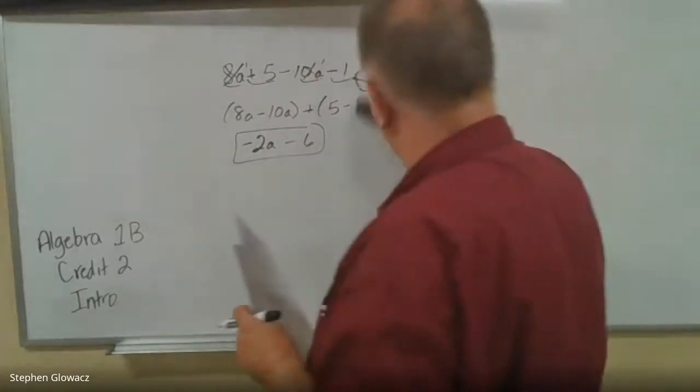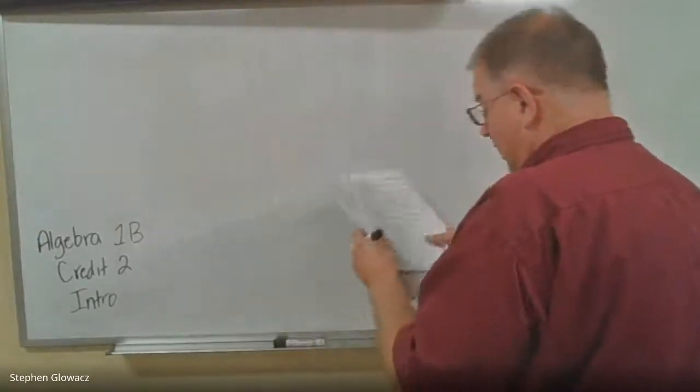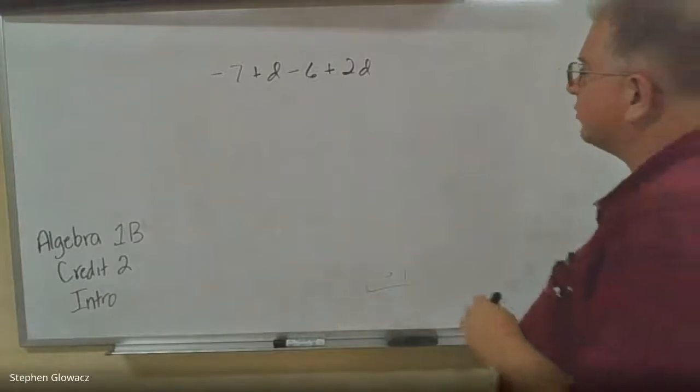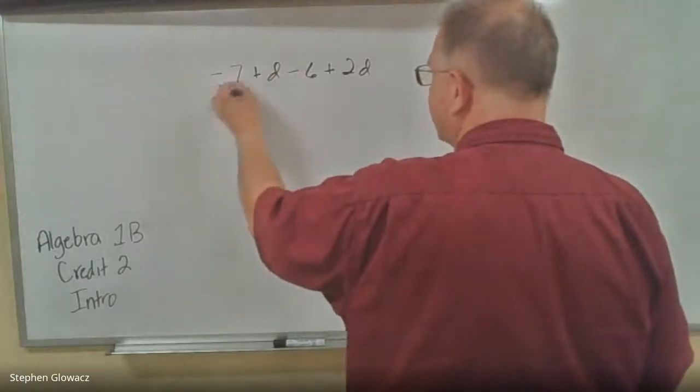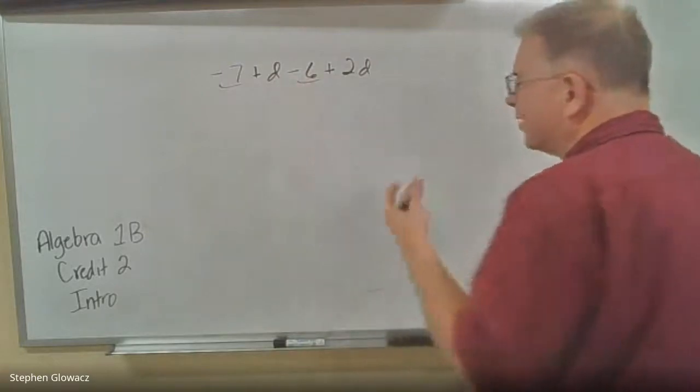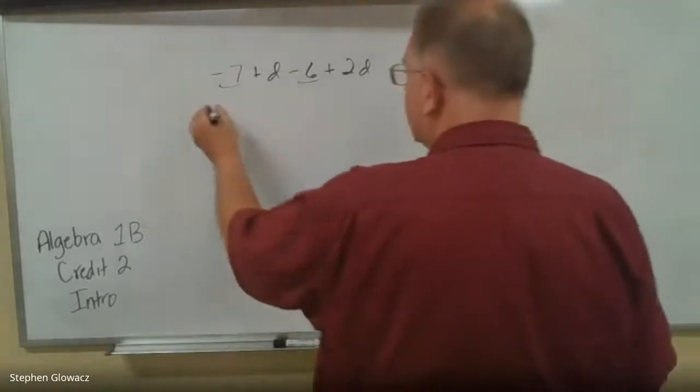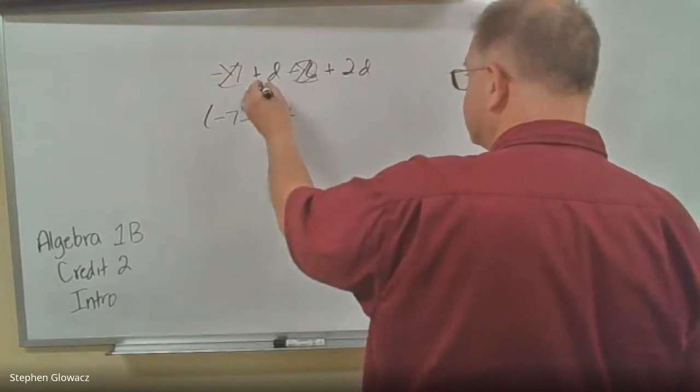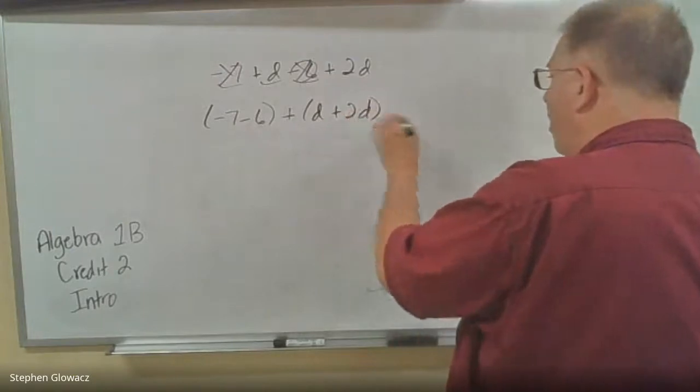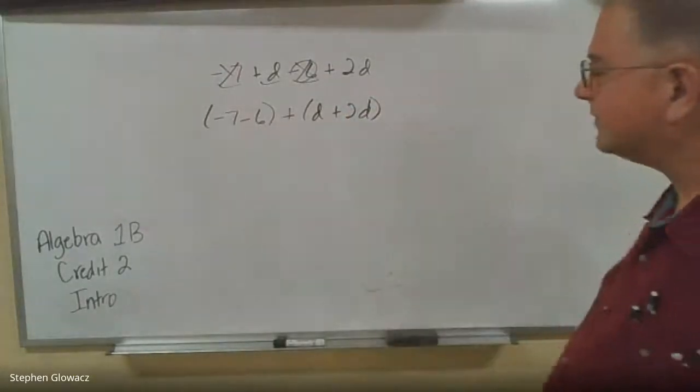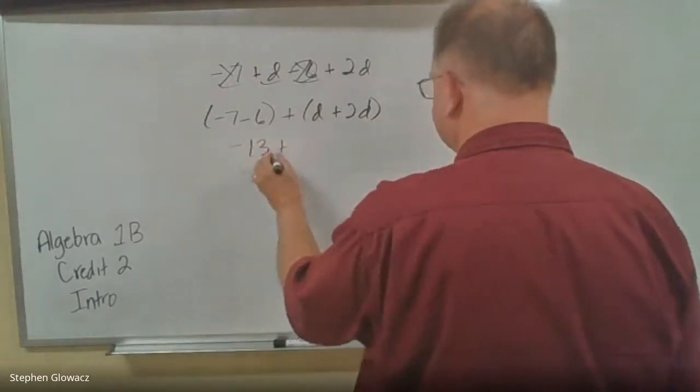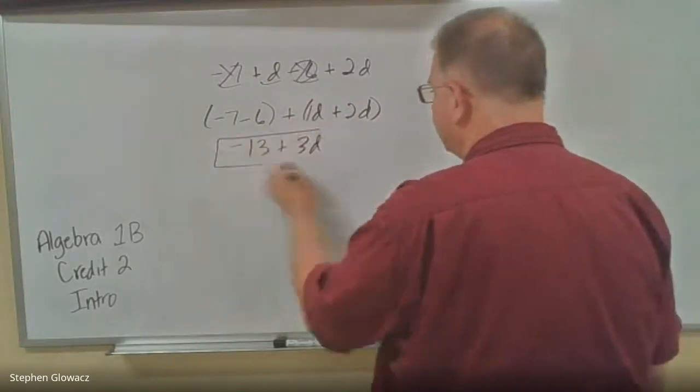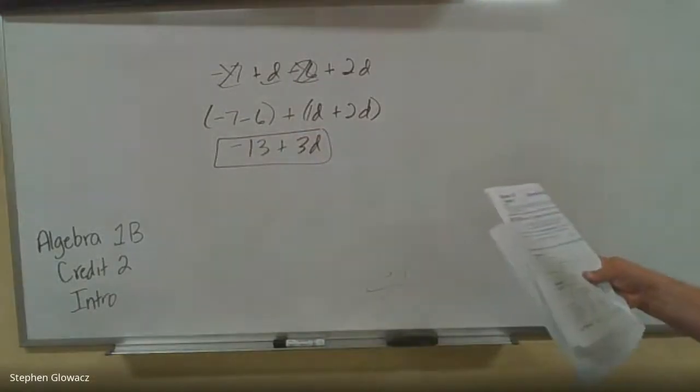Let's take a look at number five. More combining like terms. We've got negative 7 plus D minus 6 plus 2D. So let's start by grouping our constants because that's what came first. Remember, a constant term is just a term that doesn't have a variable in it. So we've got negative 7 and then minus 6. And then the variables, the Ds, we've got D plus 2D. So negative 7 minus 6 is negative 13. And D plus 2D, remember, if there's no coefficient, there's a 1 there. 1 plus 2 is 3, so that would be 3D. So negative 13 plus 3D.